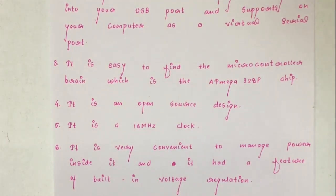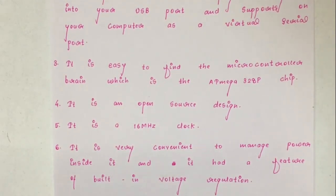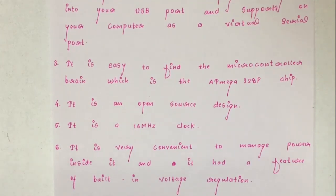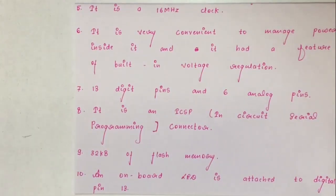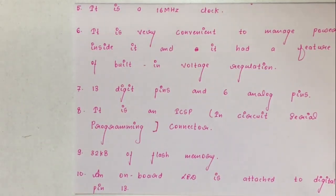Fifth, it runs on a 16MHz clock which is fast enough for most applications. Sixth, it is very convenient to manage power — it has built-in voltage regulation and can be powered directly from a USB port without any external power. You can connect an external power source of up to 12V and it regulates it to both 5V and 3.3V. Seventh, there are 13 digital pins and 6 analog pins which allow you to connect hardware to your Arduino Uno board externally.